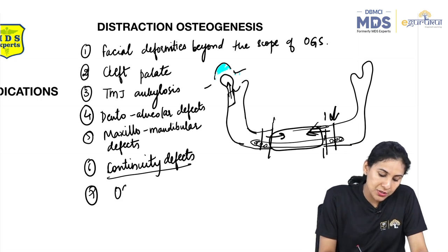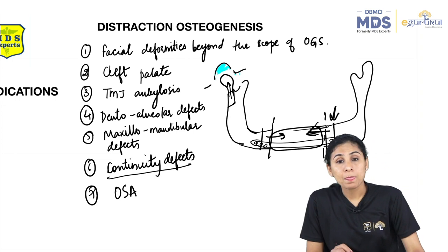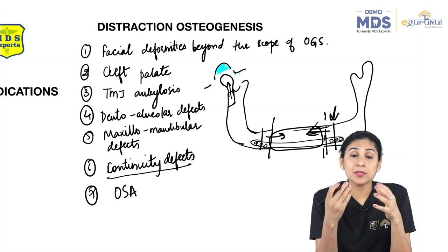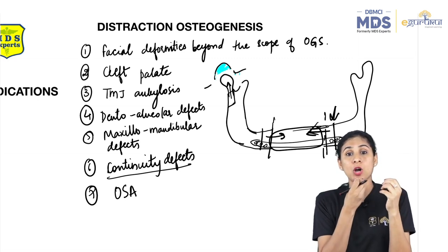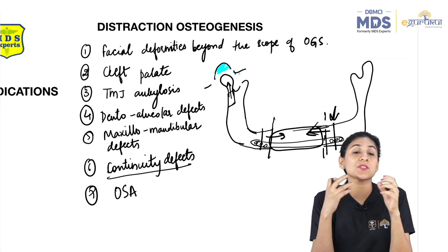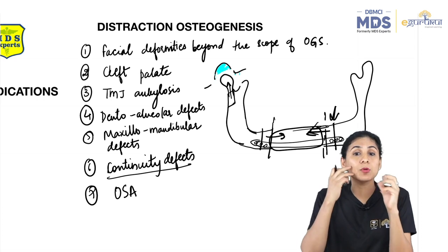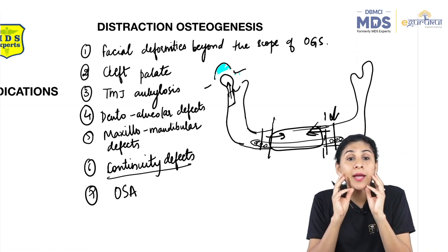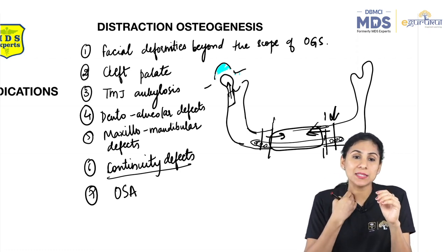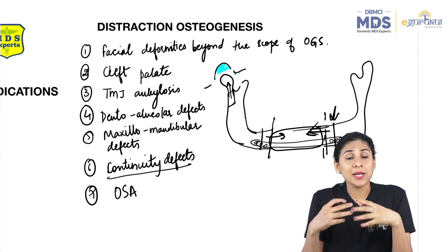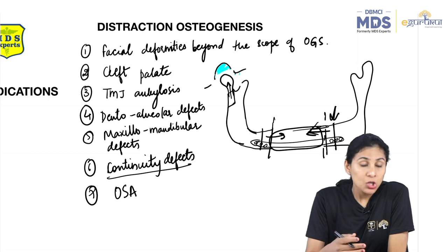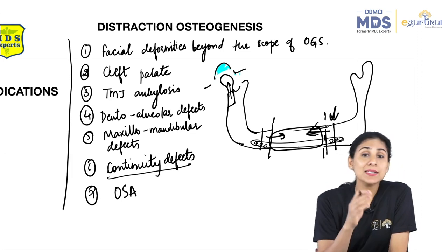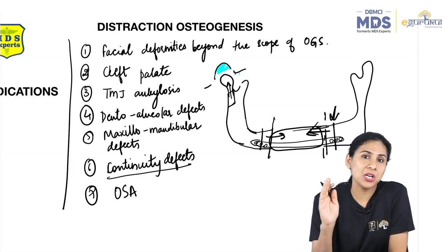One more indication is obstructive sleep apnea. Most cases involve a large tongue falling back, a short or retrognathic mandible, causing a narrow airway. You can do a maxillomandibular distraction or just mandibular distraction to move the mandible forward, opening up the airway space in the pharynx and improving obstructive sleep apnea. There are endless indications of distraction osteogenesis.